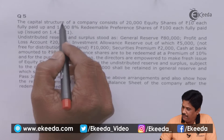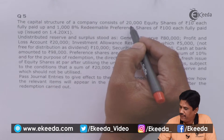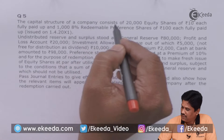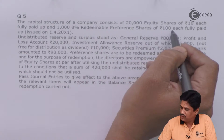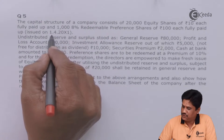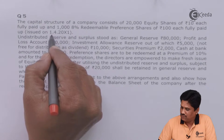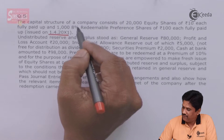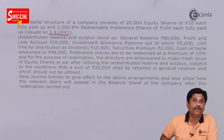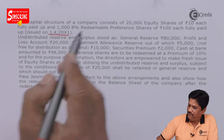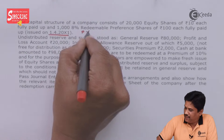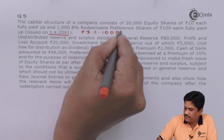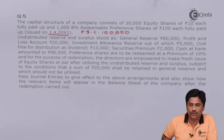Let us read the question. Capital structure of a company consists of 20,000 equity shares of Rs.10 fully paid, and 1,000 8% redeemable preference shares of Rs.100 fully paid, which were issued on 1st April 2001. The issue date doesn't matter. The key fact is 1,000 preference shares of Rs.100 fully paid, so my preference share capital is redeemable, amounting to Rs.1,00,000.